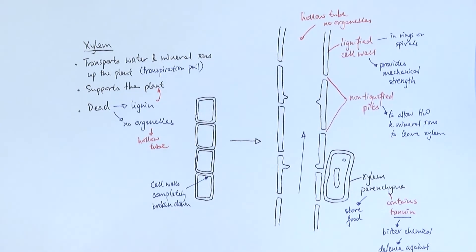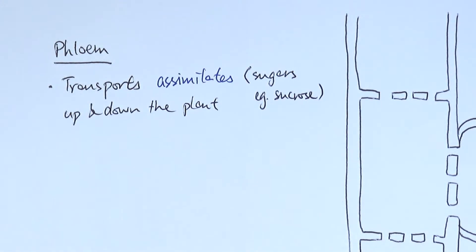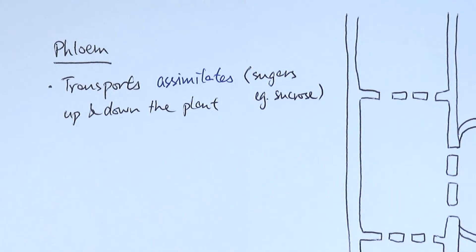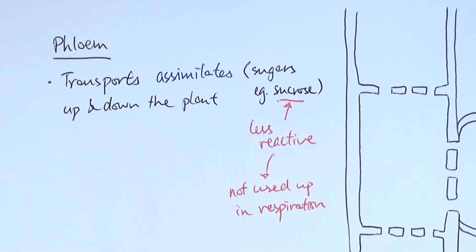Now we'll move on to the structure of phloem. The main function of the phloem is to transport assimilates up and down the plant. The word assimilates refers to the products of photosynthesis — basically the sugars. At GCSE you might remember it being about transporting glucose, because glucose is the product of photosynthesis. However, glucose is not the sugar being transported in the phloem — it's sucrose instead. The glucose made in the leaves is converted into sucrose, which is a less reactive, more stable form of sugar. Because it is less reactive, it's not as easily used up in respiration as glucose would be.